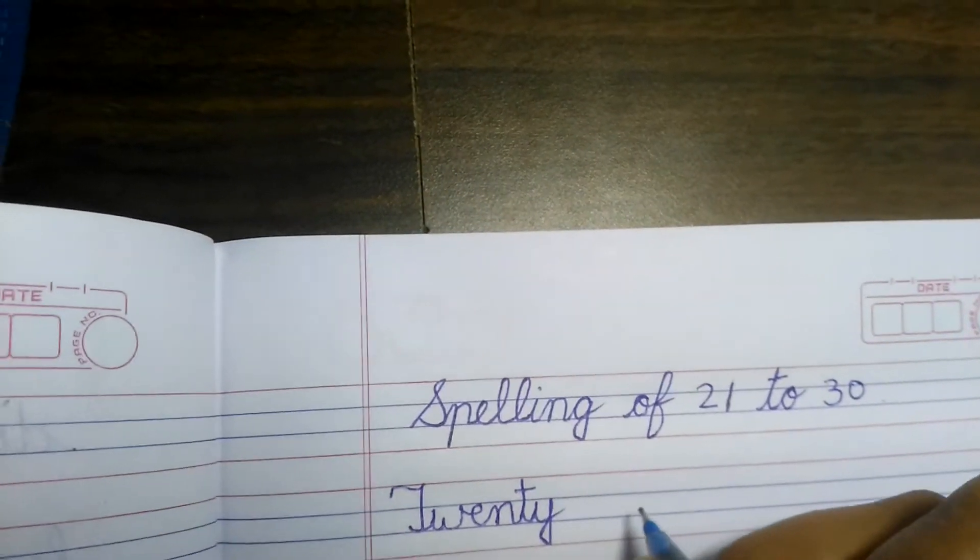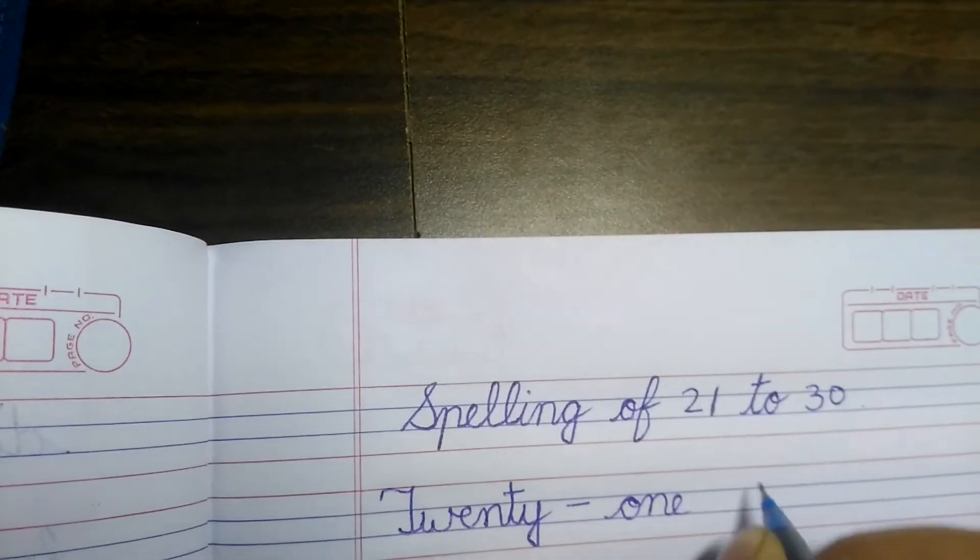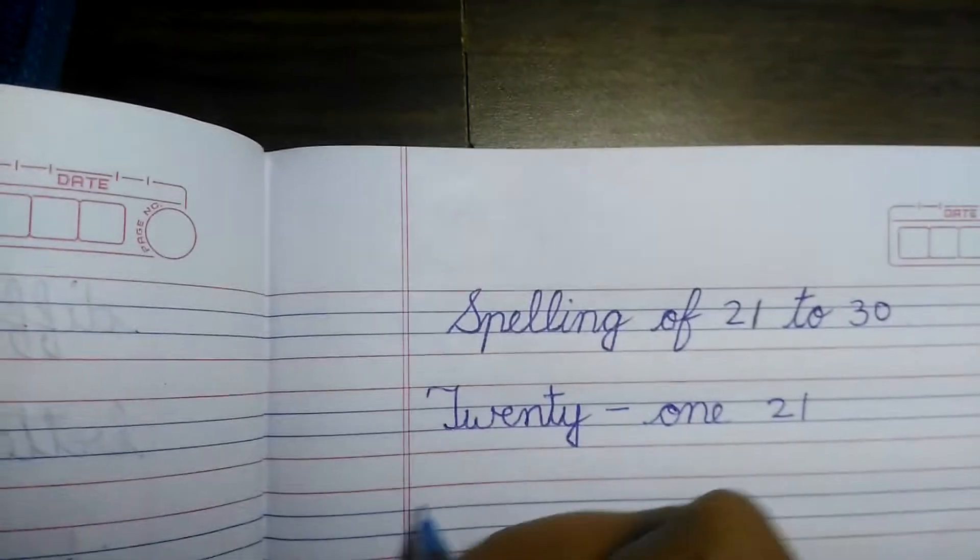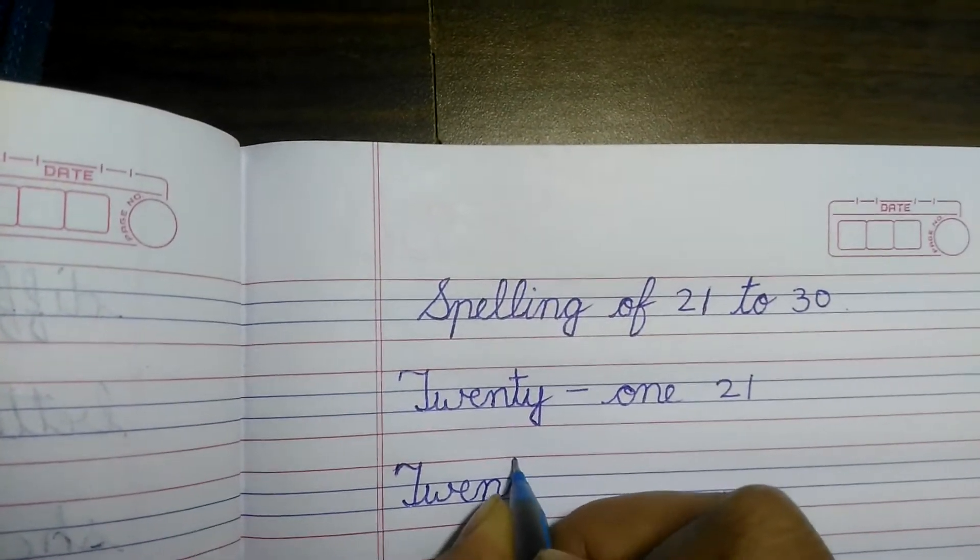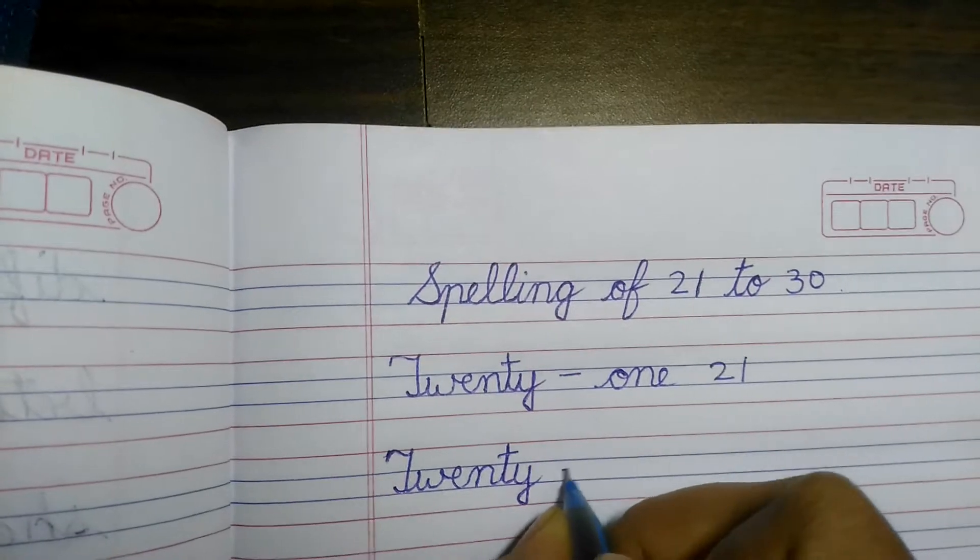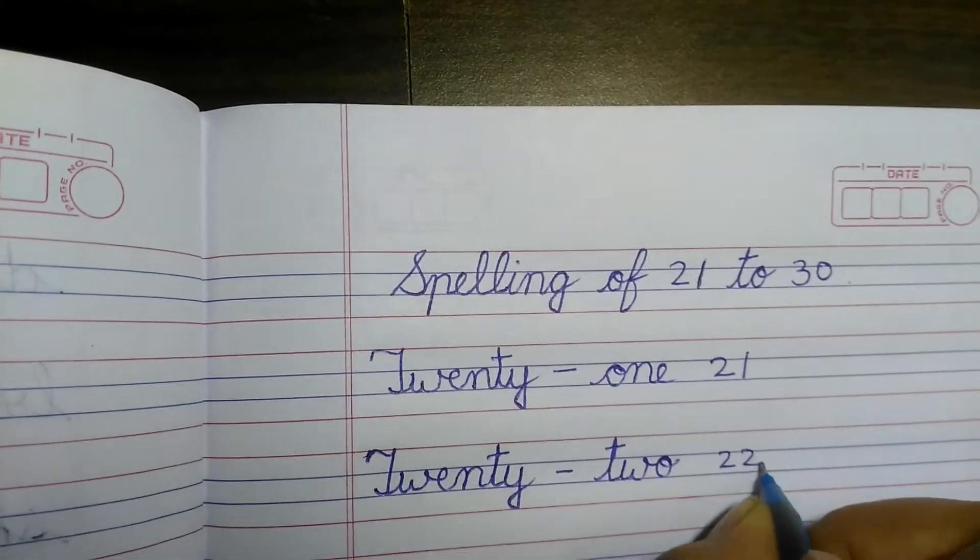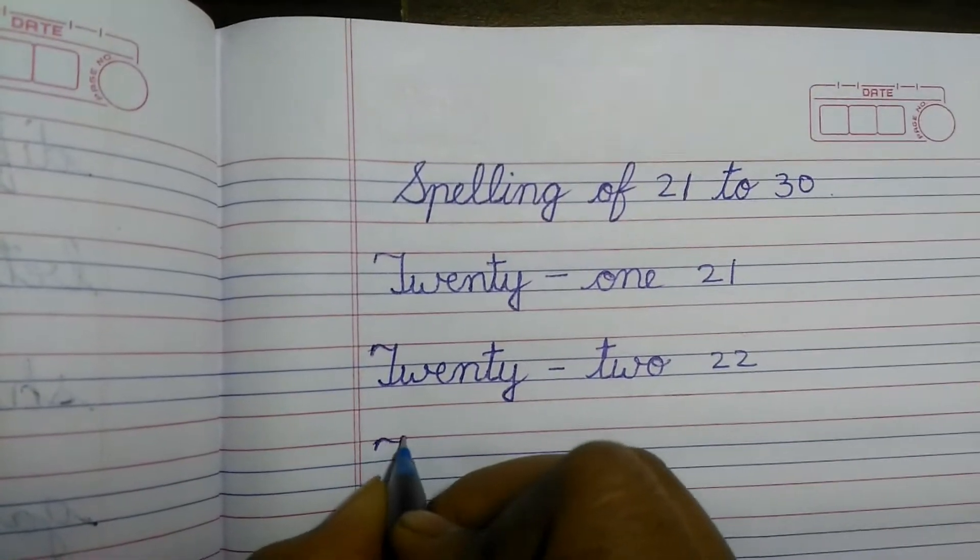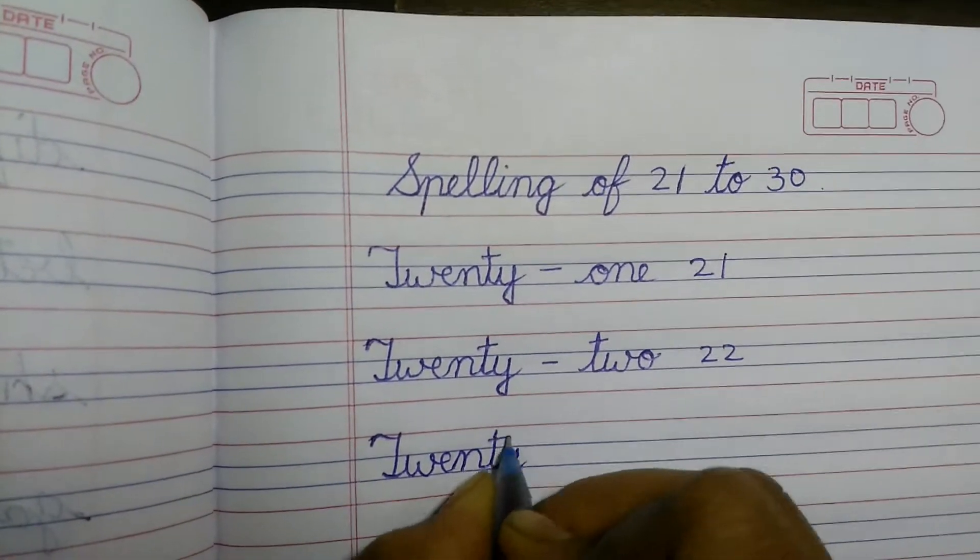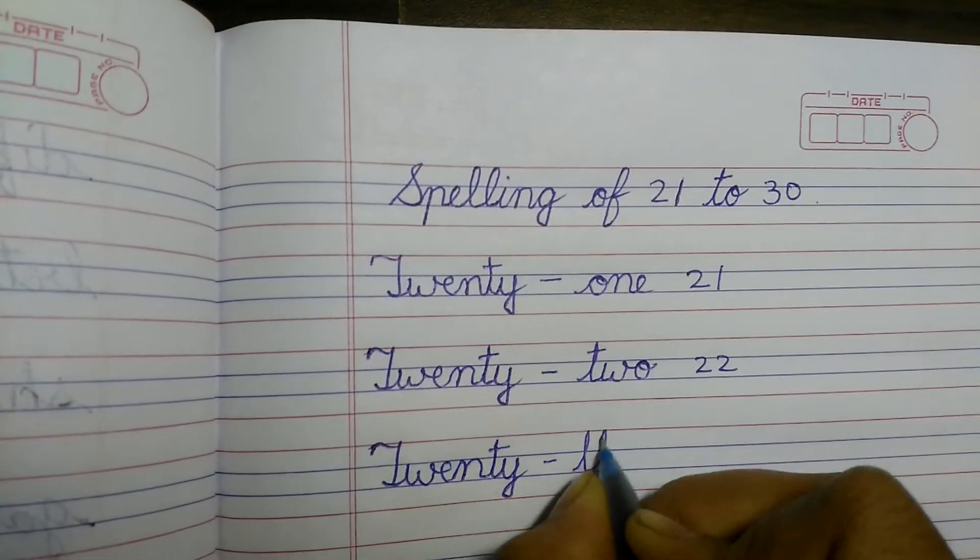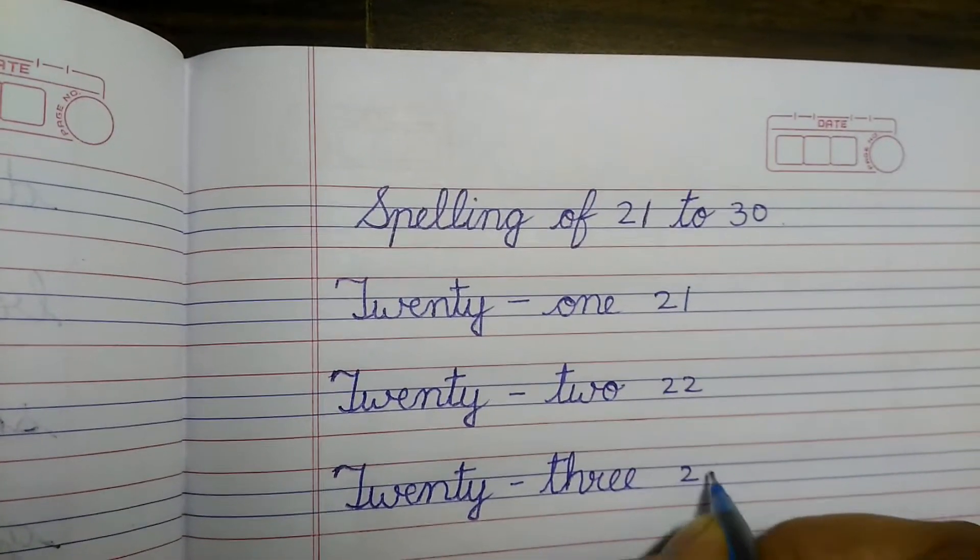Twenty-one: T-W-E-N-T-Y, twenty, O-N-E, one, twenty-one. Twenty-two: T-W-E-N-T-Y, twenty, T-W-O, two, twenty-two. Twenty-three: T-W-E-N-T-Y, twenty, T-H-R-E-E, three, twenty-three.